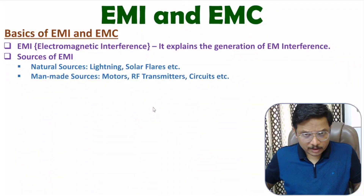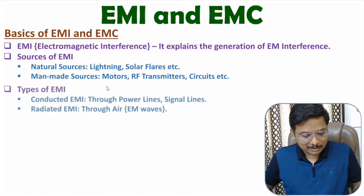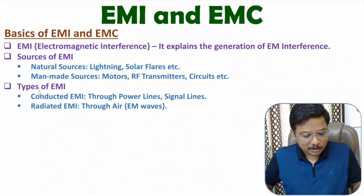Likewise, this mobile could be receiving many other Wi-Fi signals — that is also EMI. EMI means electromagnetic interference. So, unwanted electromagnetic waves received by a given device is electromagnetic interference. If you talk about EMI, there could be two types: conducted EMI or radiated EMI.